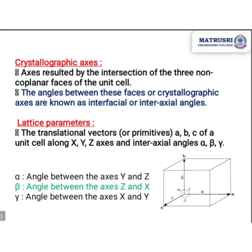In this unit cell, alpha is the angle between the y and z axes, beta is the angle between the z and x axes, and gamma is the angle between the x and y axes. Based on these six lattice parameters, unit cells are classified into seven crystal systems.